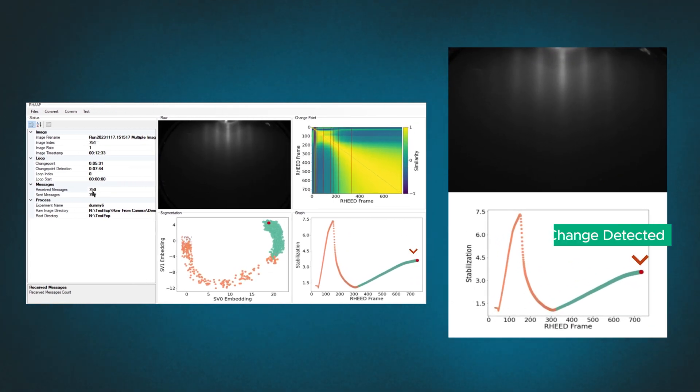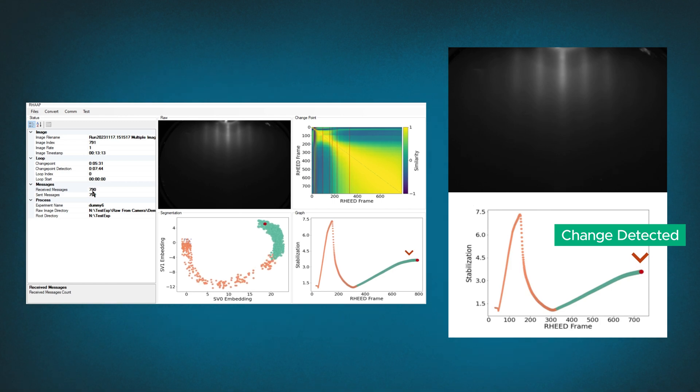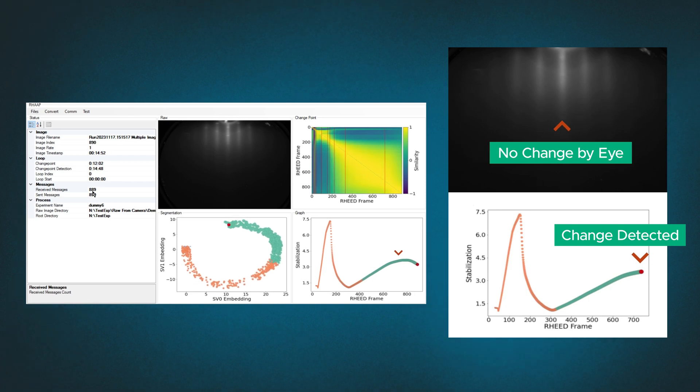Here, the algorithm is detecting an inflection point where the material is just beginning to become rough. At this point, the change is too subtle for the scientists to detect.